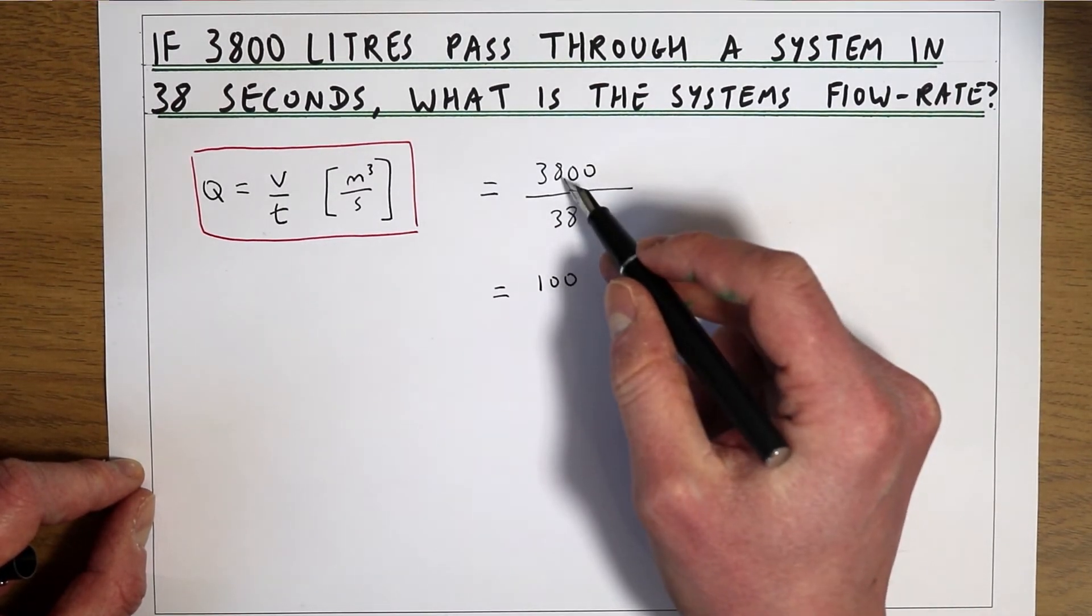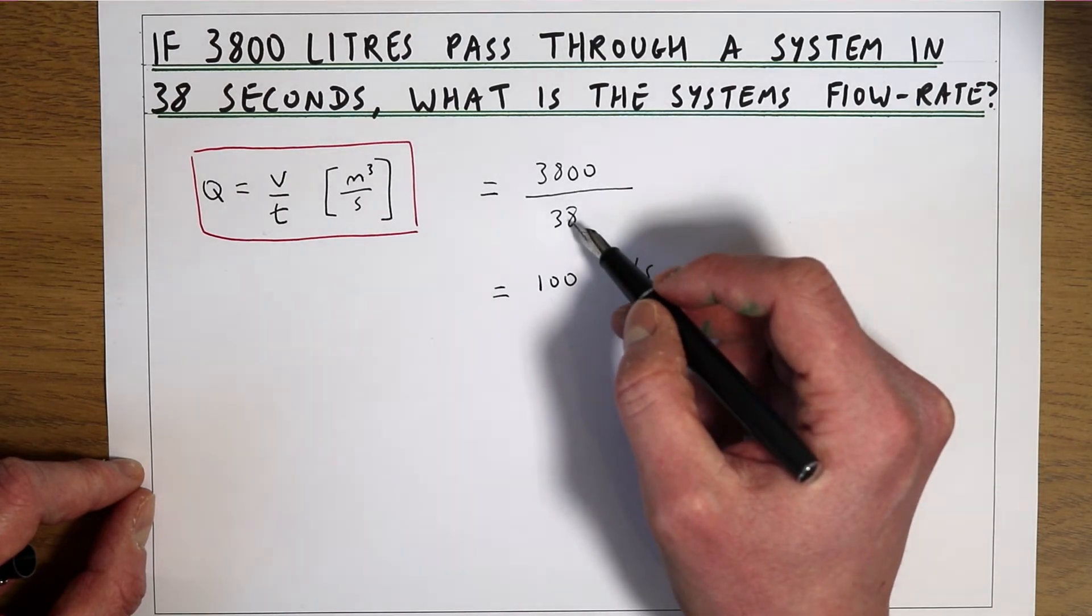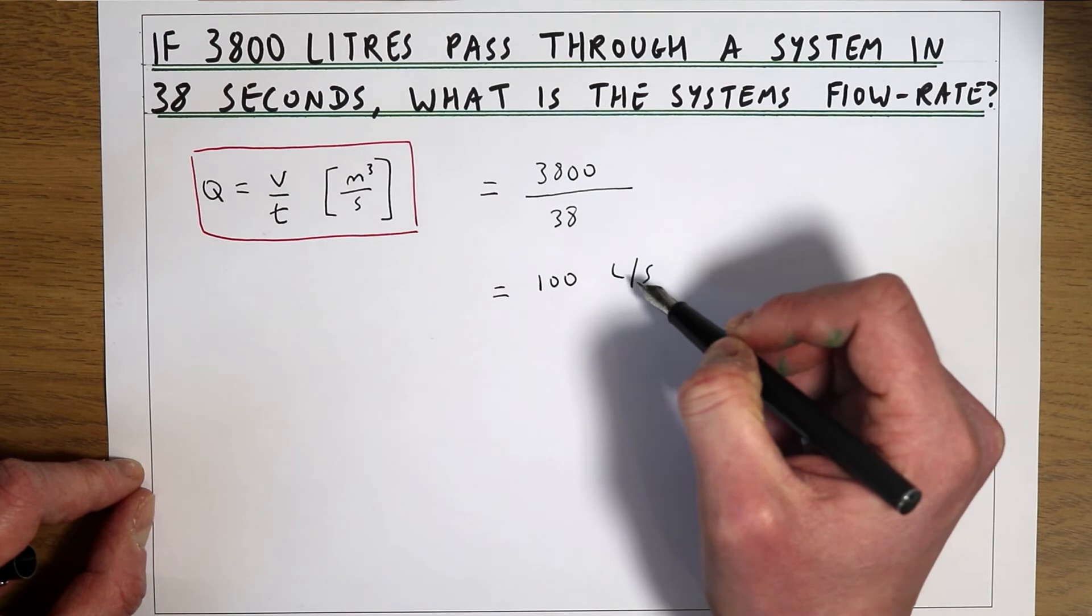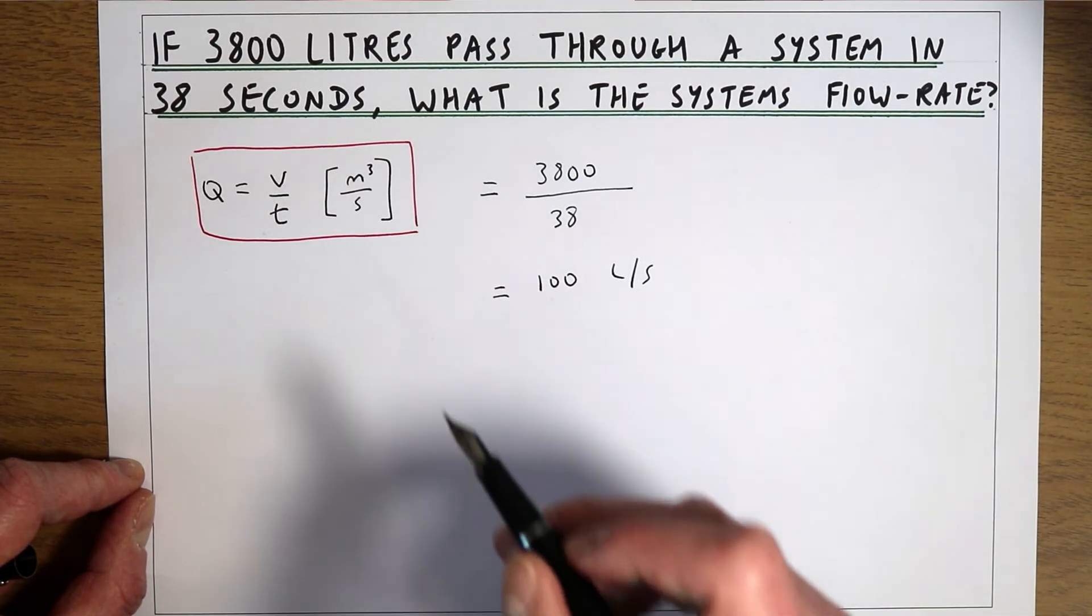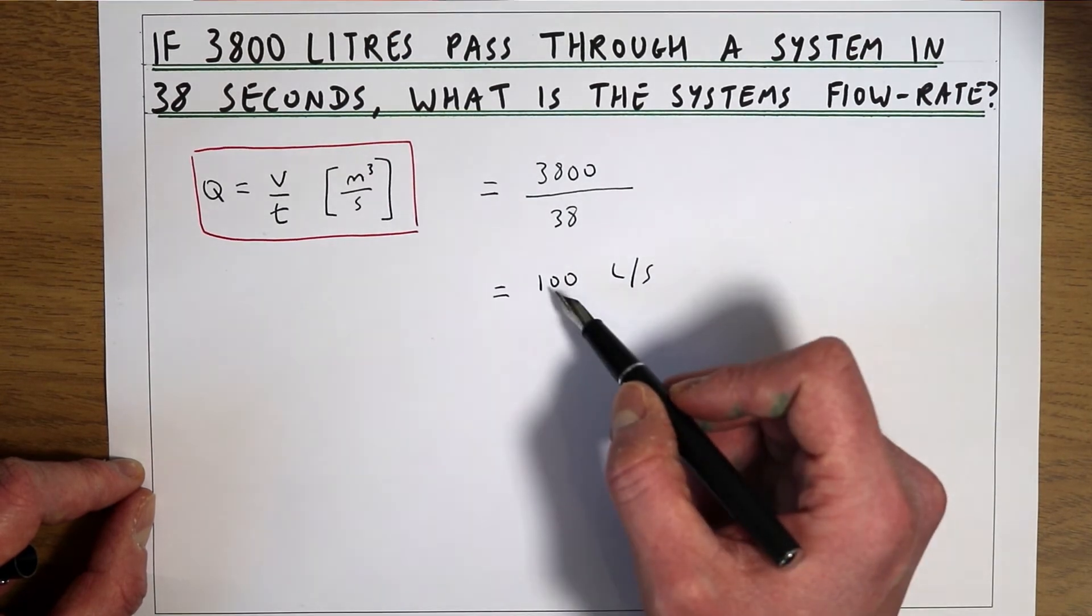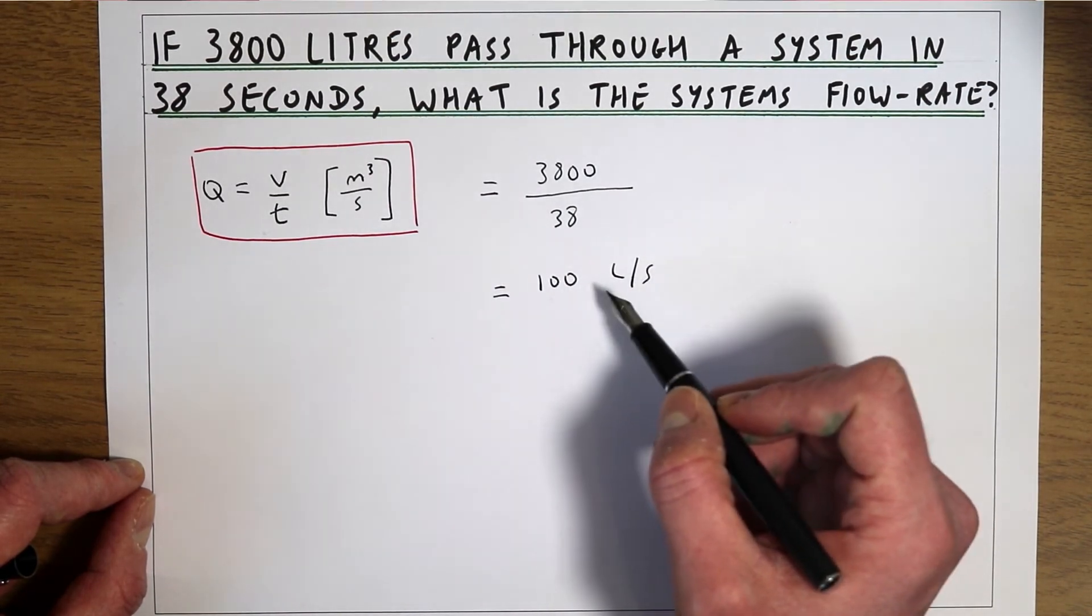So 3,800 litres going through the system in 38 seconds gives us a flow rate of 100 litres per second. Now if we want to get that into SI units of metres cubed per second we need to convert that litres per second answer into metres cubed per second.